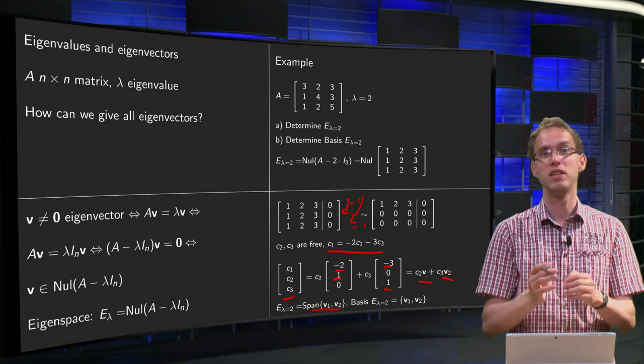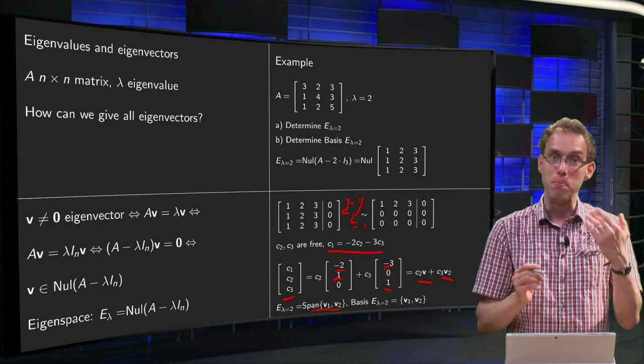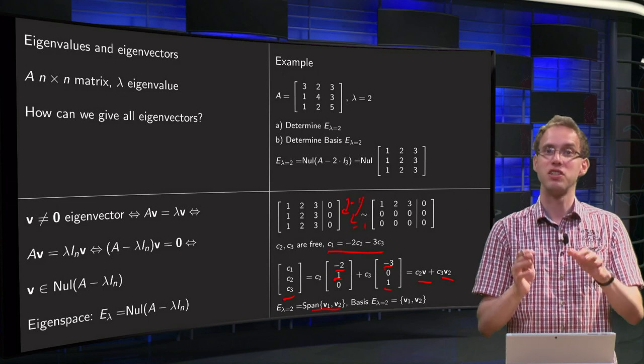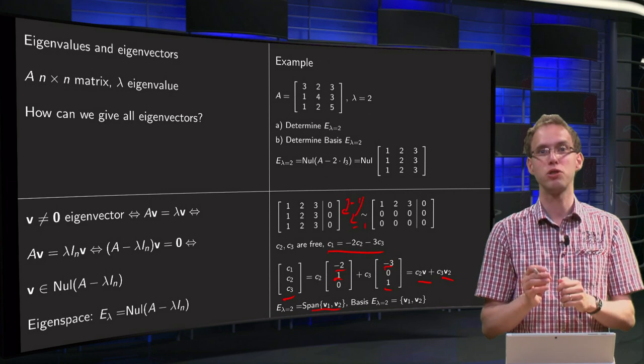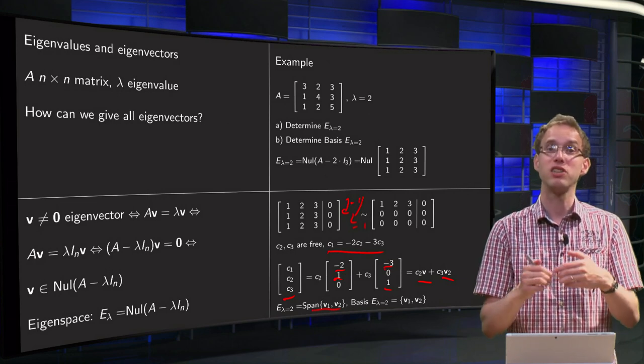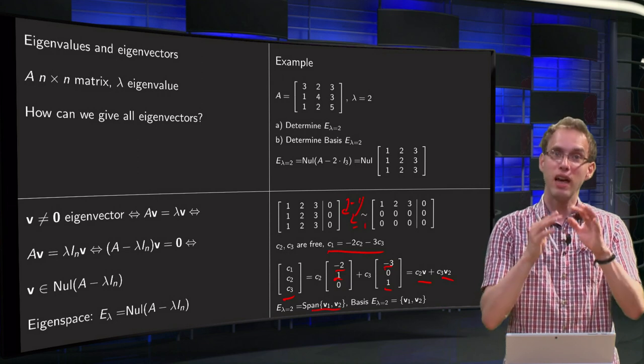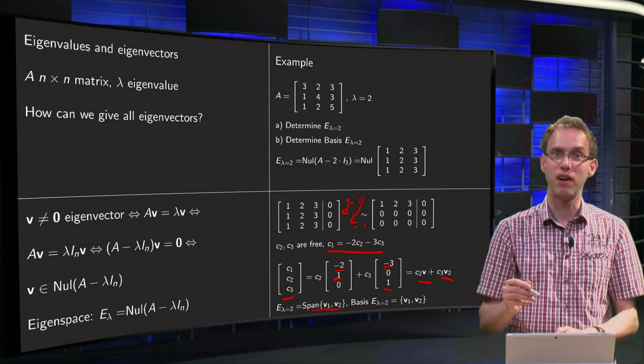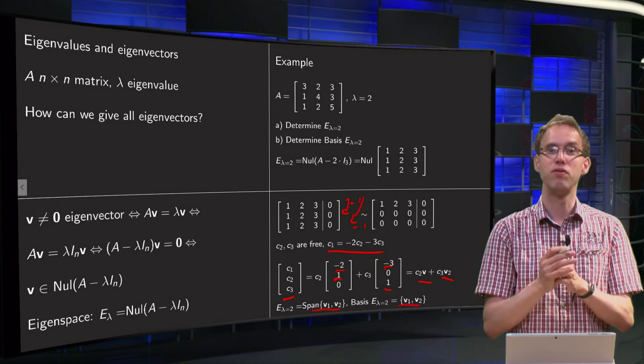And so that answers question A: find the full eigenspace, that is the span of V1 and V2. And second question, find the basis of this eigenspace. Well that is easy, because if you are determining the null space in this way, the vectors you get are automatically independent. So if you have your E lambda, you can immediately find your basis, because that is just consisting of V1 and V2.